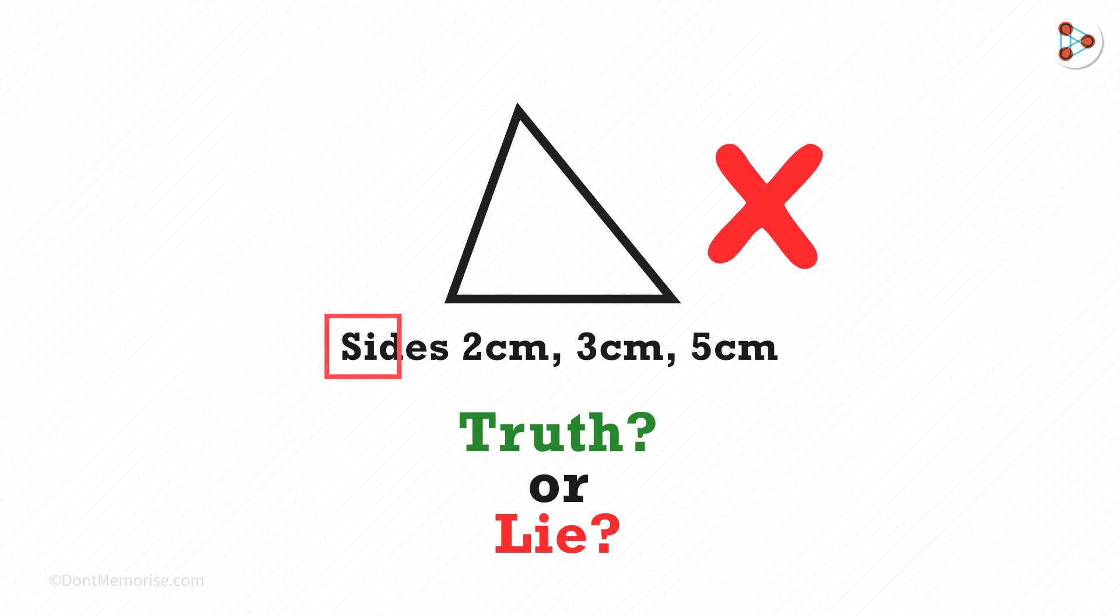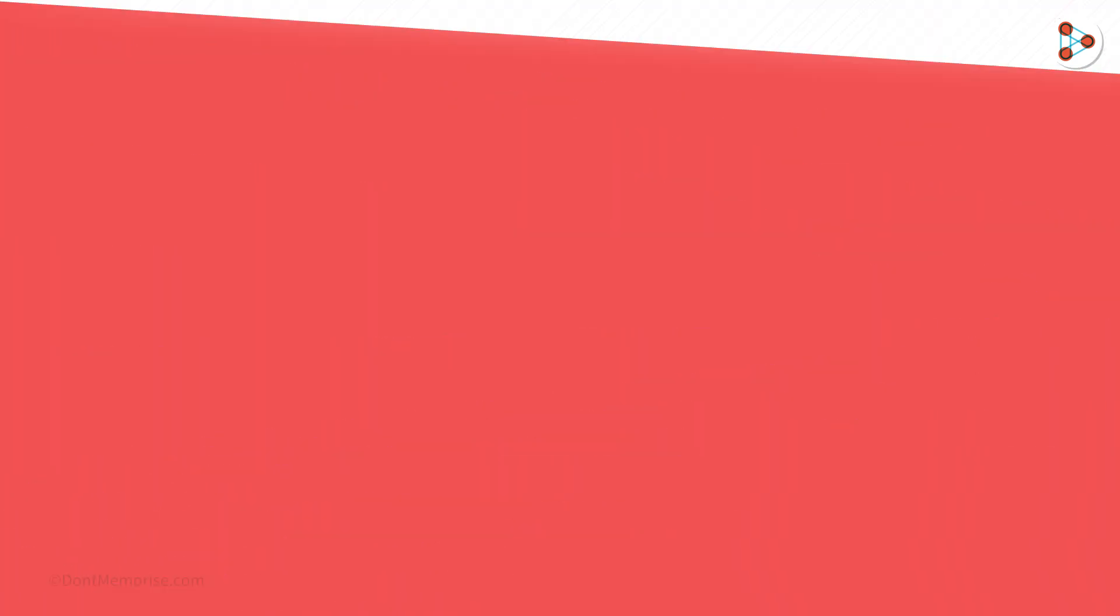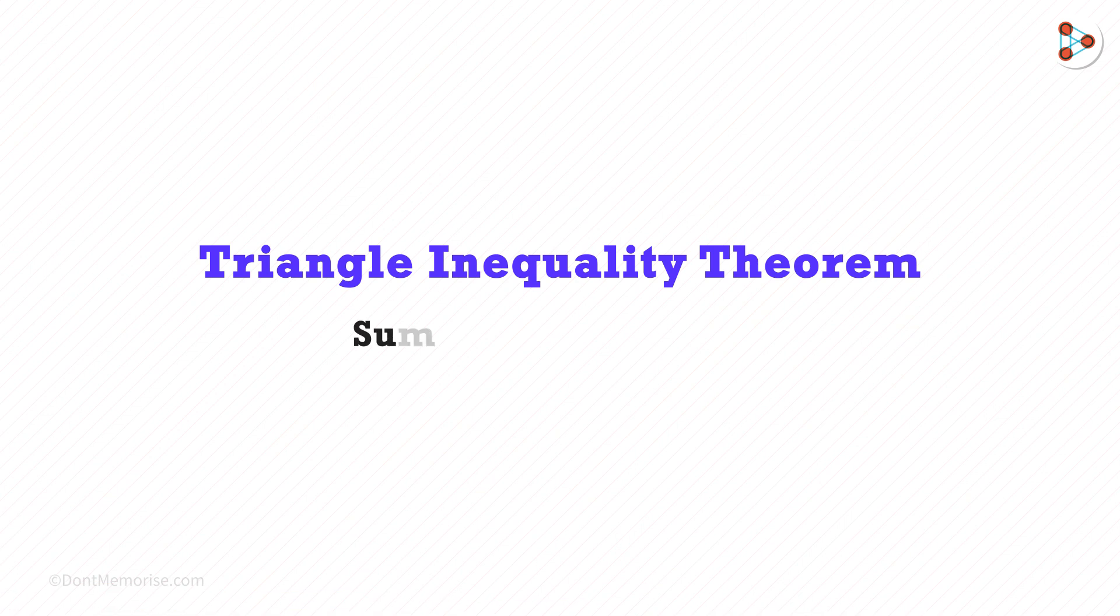Well, it's impossible to draw a triangle with sides 2, 3 and 5. Why so? For that, we need to understand the triangle inequality theorem which says that the sum of any two sides of a triangle will always be greater than the third side.